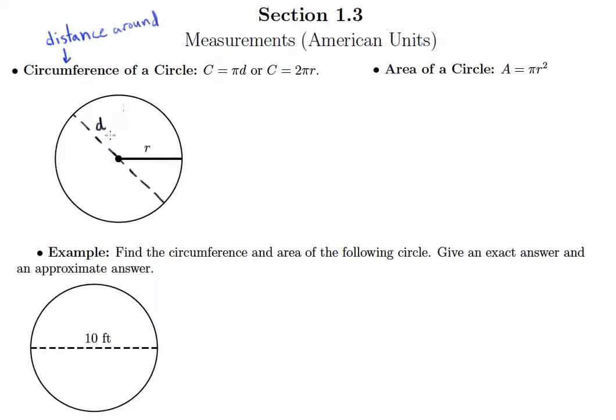Now there's two different things to look for when you're given a circle. Sometimes you might be given the diameter of the circle, and the diameter is just the distance from a point on the circle to its opposite point on the other side. So this dashed line here gives me the diameter.